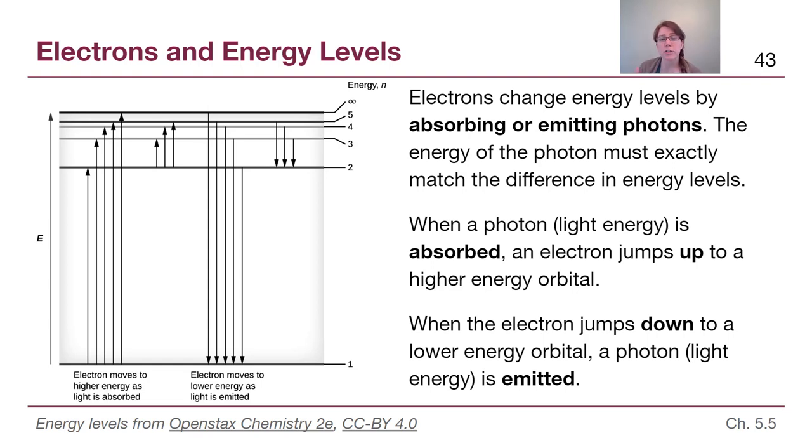Now, electrons are able to change their energy level, they're able to go up the ladder or down the ladder, but they do that by emitting or absorbing energy in the form of photons.